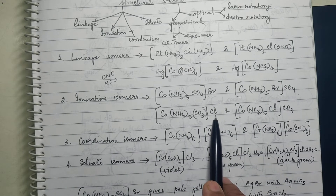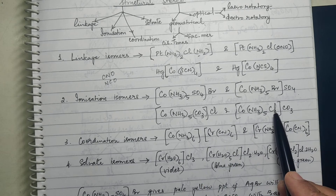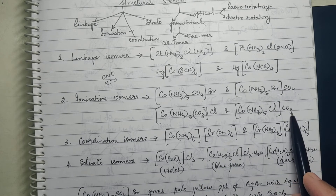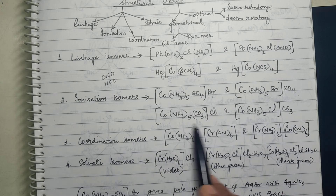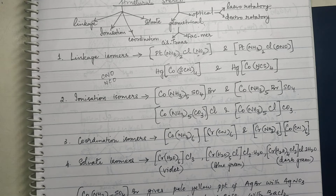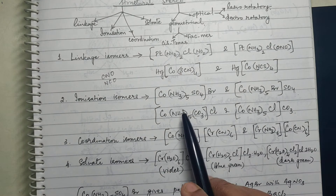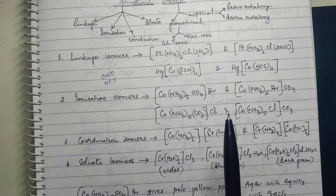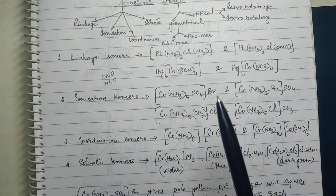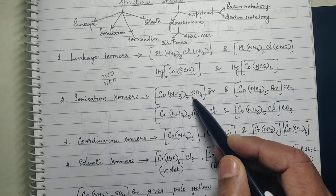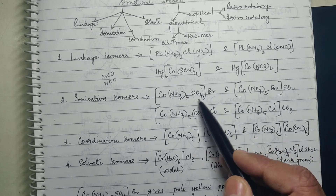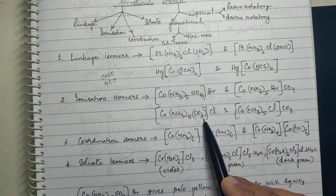Similarly, if Cl is outside as a counter ion in one complex and carbonate is inside as a ligand, while in the isomeric form Cl is inside and carbonate is the counter ion — these are ionization isomers. The key thing to remember is that the coordination number remains constant. Whether it is this form or that form, count the coordinating ligands: five plus one gives six. The total number of coordinating ligands must always remain six.